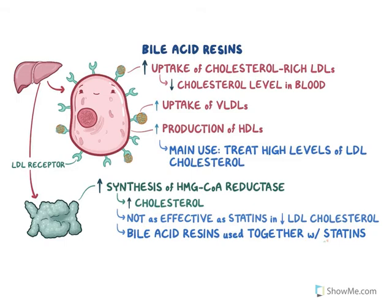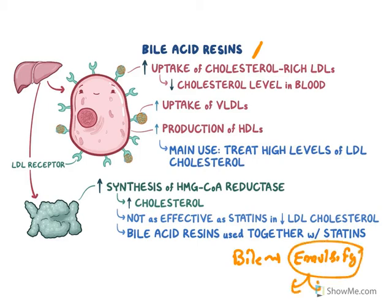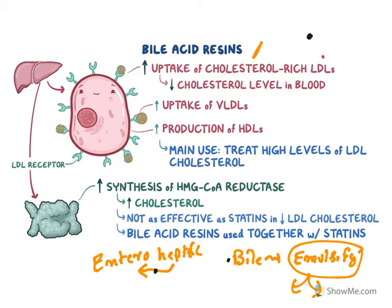The next class is bile acid resins, also known as bile acid sequestrants. The basic job of bile is to emulsify fat molecules. Whatever fatty food we take is emulsified by bile and then undergoes enzymatic digestion. After digestion, bile gets back to the liver — this is what we call enterohepatic circulation. Bile goes from the liver into the intestine, emulsifies fatty food, aids digestion, and then returns to hepatic tissue. Bile acid sequestrants combine with the bile molecule, and this complex is excreted out of the body.